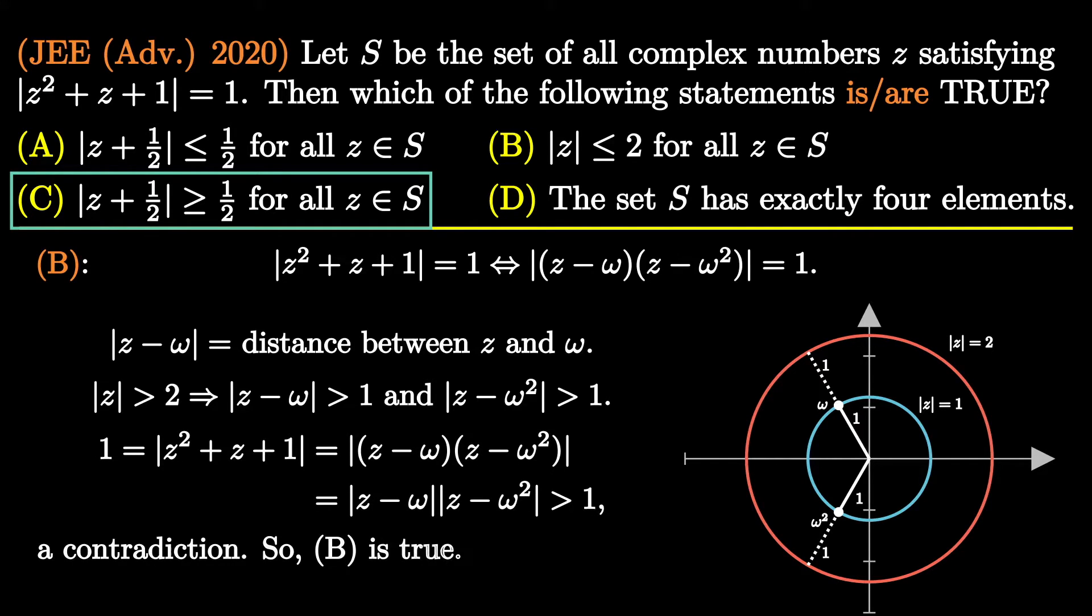Fortunately, this leads to contradiction. Thus, option B is correct. We conclude by marking B and C as correct options. This completes the solution.